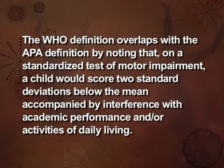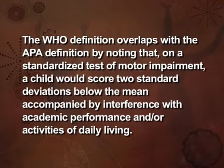The WHO definition overlaps with the APA definition by noting that on a standardized test of motor impairment, a child would score two standard deviations below the mean, accompanied by interference with academic performance and/or activities of daily living. It notes there should be no diagnosable neurological disorder and excludes those with an IQ below 70. Despite guidance from both organizations, there are still issues surrounding identification and definitions, though the exclusion of individuals with an IQ of 70 and below is agreed upon by most clinicians and researchers.